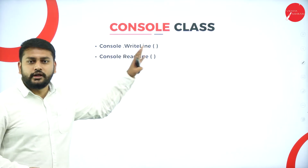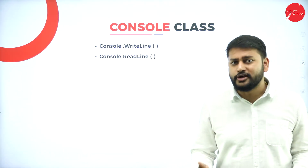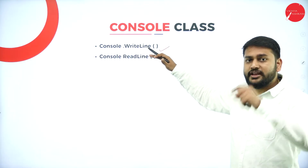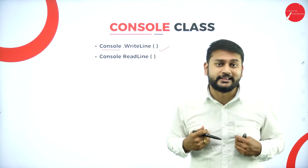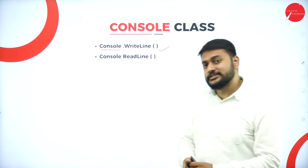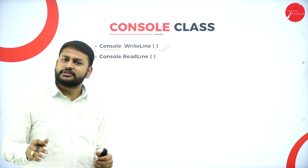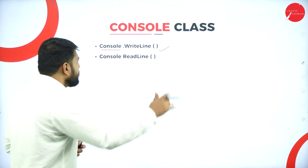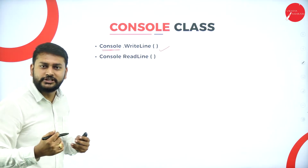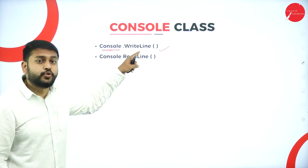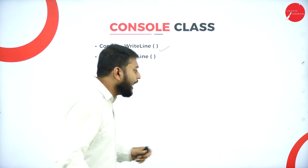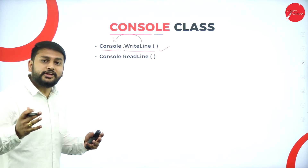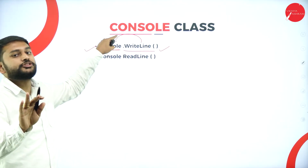When it comes to the console class, two important things you have already come across: console.WriteLine. Console is a class — you need to understand that first, because C# is a pure object-oriented programming language where everything is treated in the form of classes, objects, and methods. Inside the console class, I have a method called WriteLine. If I want to print anything on the screen, I will be using this method.